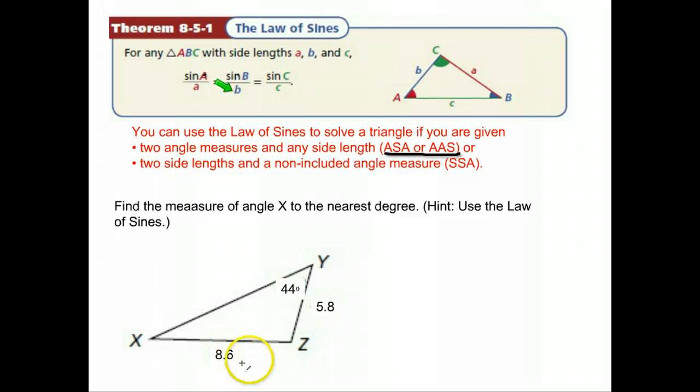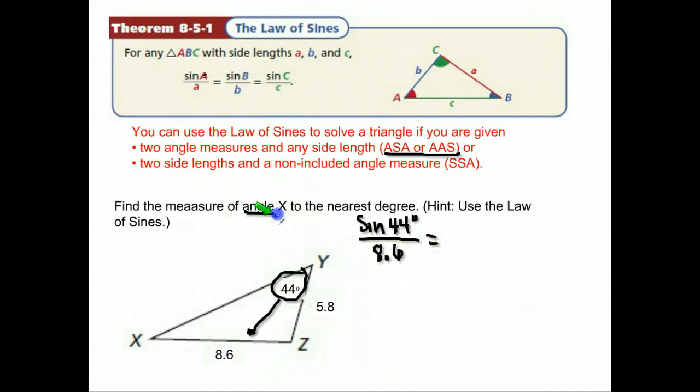So let's apply it here in this problem. This one is going to solve a little bit differently than the ones we did in the first set. We're supposed to set this up as the sine of an angle in the triangle. We know this angle is 44 degrees over the length of the side across from it. The length of the side across from that angle is 8.6. We're supposed to find angle x.